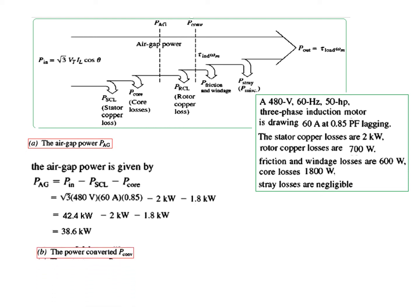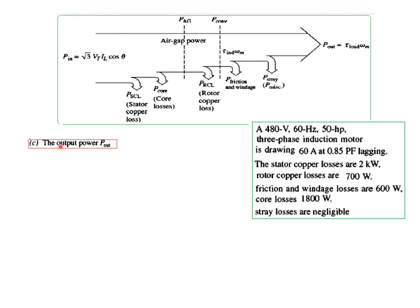Next is the power converted. We subtract the rotor copper loss from the air gap power: P_converted = P_AG − P_rotor_copper = 38.6 kW − 0.7 kW = 37.9 kW. For the output power, we subtract the friction and windage loss of 1,800 W (0.6 kW) and miscellaneous losses, which are 0. So P_out = 37.9 − 0.6 = 37.3 kW.